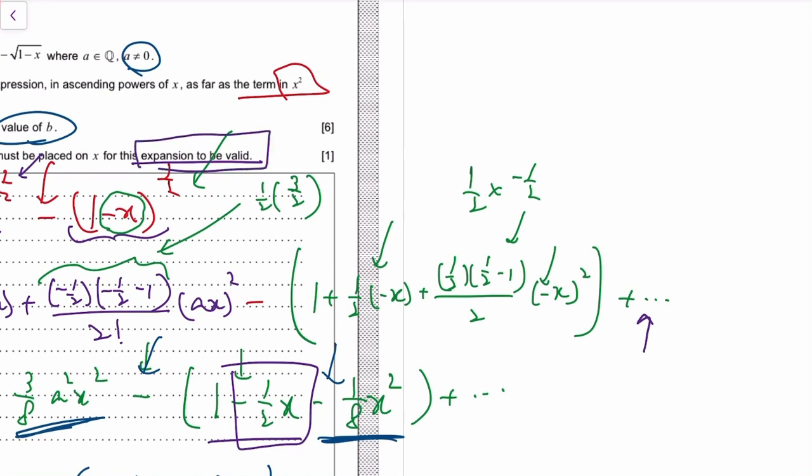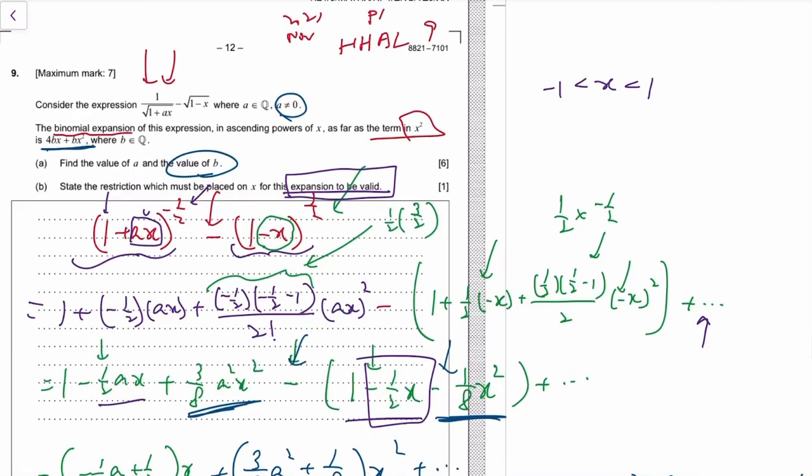But usually I would use the term when is it valid. Turns out it's valid as long as your x is between negative 1 to 1. Except for the first expansion our x isn't really x, it's ax.